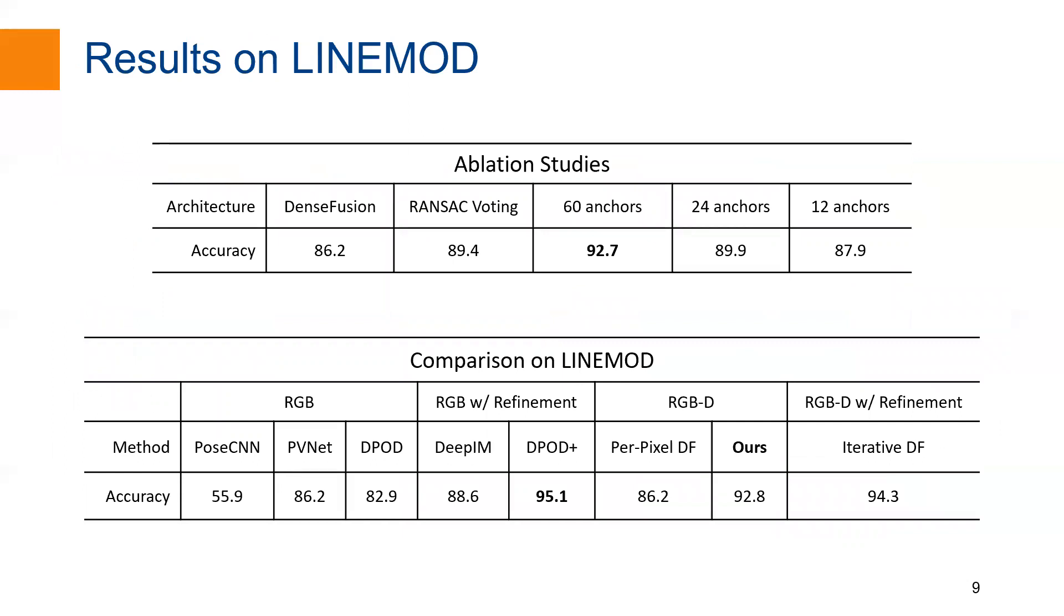We conduct ablation studies on LineMOD dataset to validate our design of the network. Starting from the baseline solution, we incrementally implement our new components. Both 3D RANSAC-based voting and the discrete-continuous regression could boost the performance of the network. As expected, the performance is increasing along with the number of rotation anchors. Compared with other state-of-the-art methods, our method achieves the highest accuracy if there is no refinement.